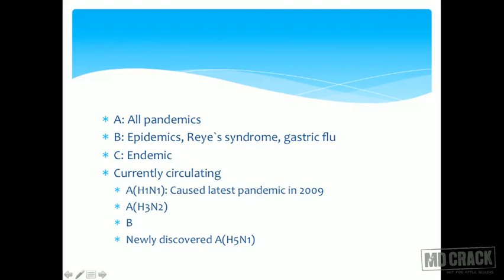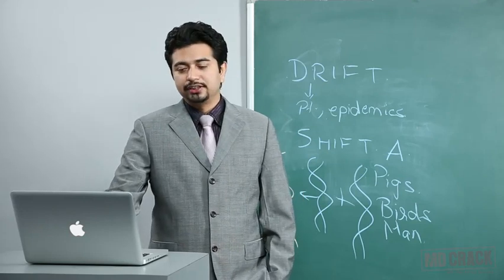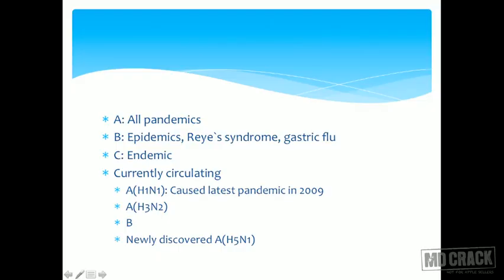B has therefore been named as a virus causing gastric flu. Reye's syndrome is acute encephalopathy plus fatty degeneration of the liver. If a patient with influenza takes aspirin, they may develop Reye's syndrome, presenting with coma, convulsions, and encephalopathic symptoms, plus fatty liver. Reye's syndrome is also associated with influenza B.